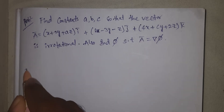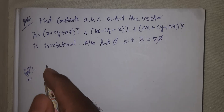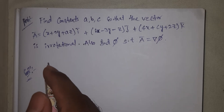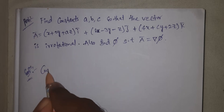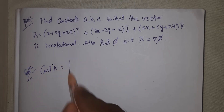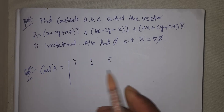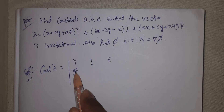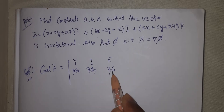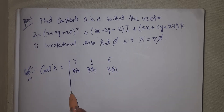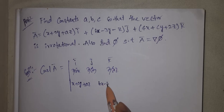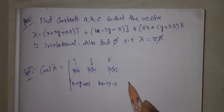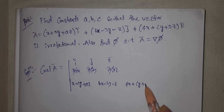Irrotational means curl F bar equal to 0 bar. So curl A bar is the determinant with I bar, J bar, K bar in the first row; dou/dou x, dou/dou y, dou/dou z in the second row; and x plus 2y plus az, bx minus 3y minus z, 4x plus cy plus 2z in the third row.